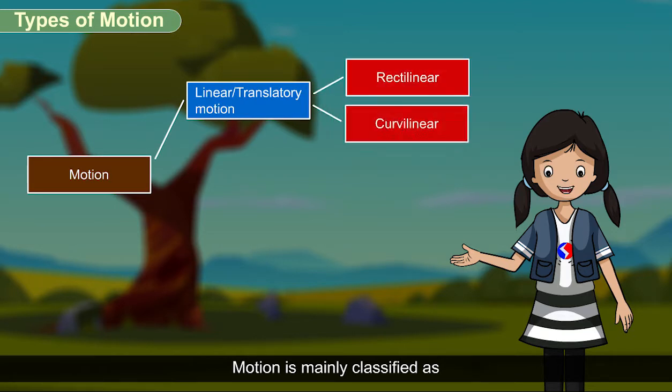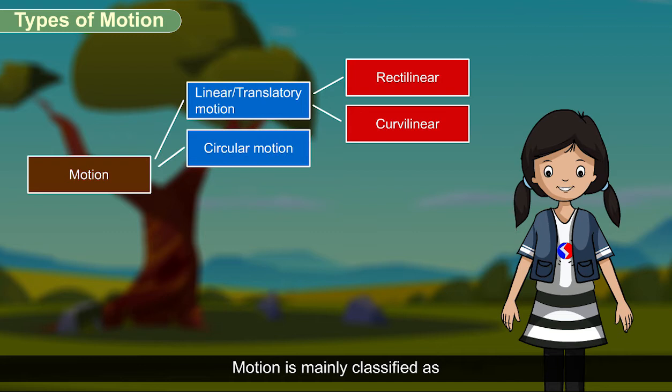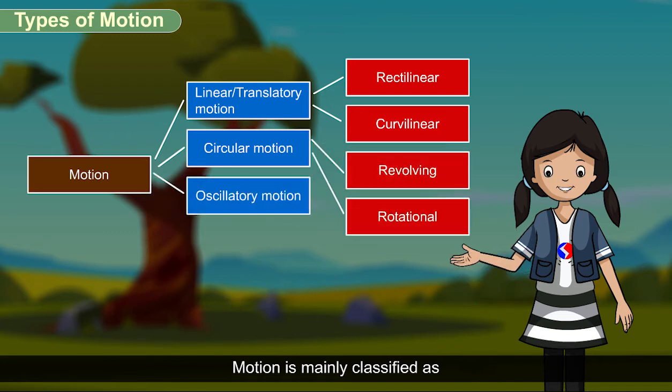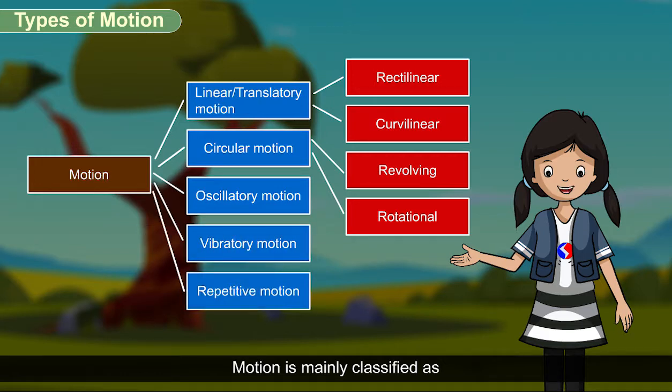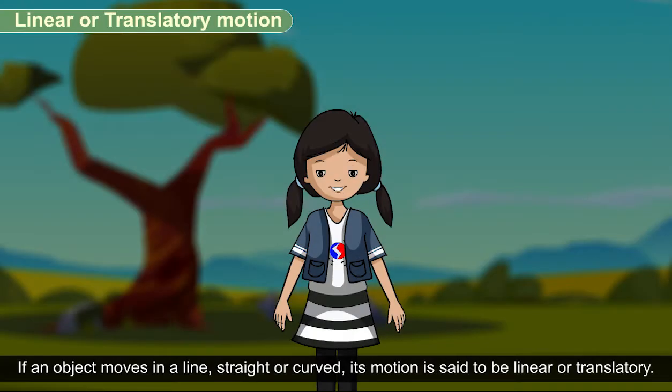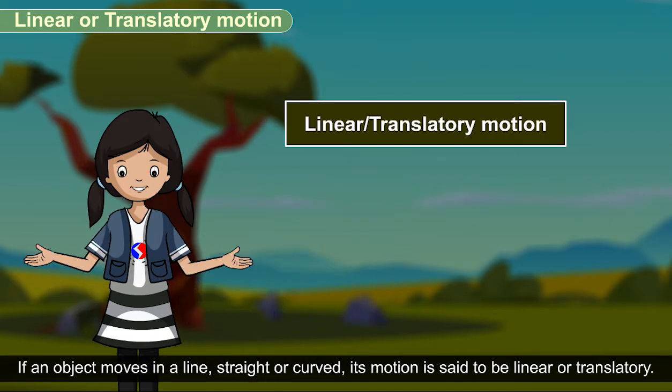Motion is mainly classified as linear or translatory motion, rectilineal, curvilineal, circular motion, revolving, rotational, oscillatory motion, vibratory motion, repetitive motion, periodic, and non-periodic. If an object moves in a line, straight or curved, its motion is said to be linear or translatory.